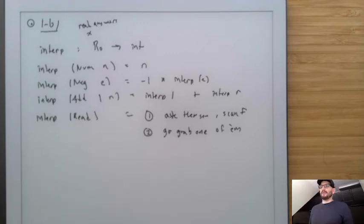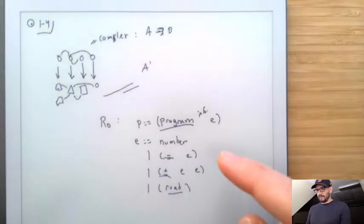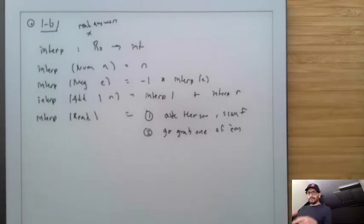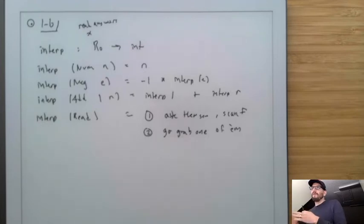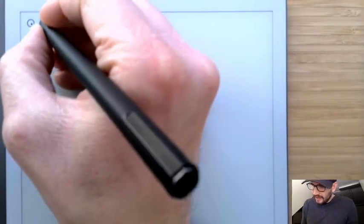What I actually do is I go ask the user, but I use a programming language where my scanf function can be changed from the outside to not look at actual standard input but instead look in another place. When I test it, I send in particular values — it's kind of like a way of faking input. You don't really care about this interpreter for running programs; you care about it for testing your compiler. So we now have our basic R0 language, our ASTs, and our interpreter.